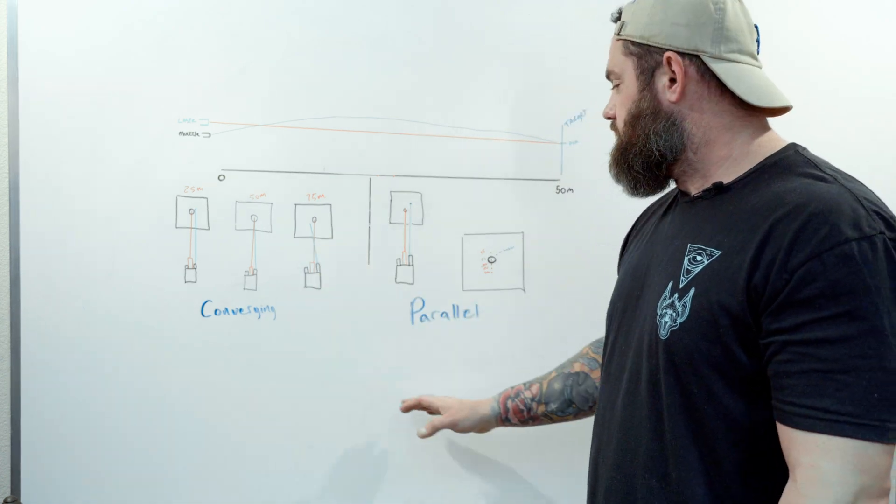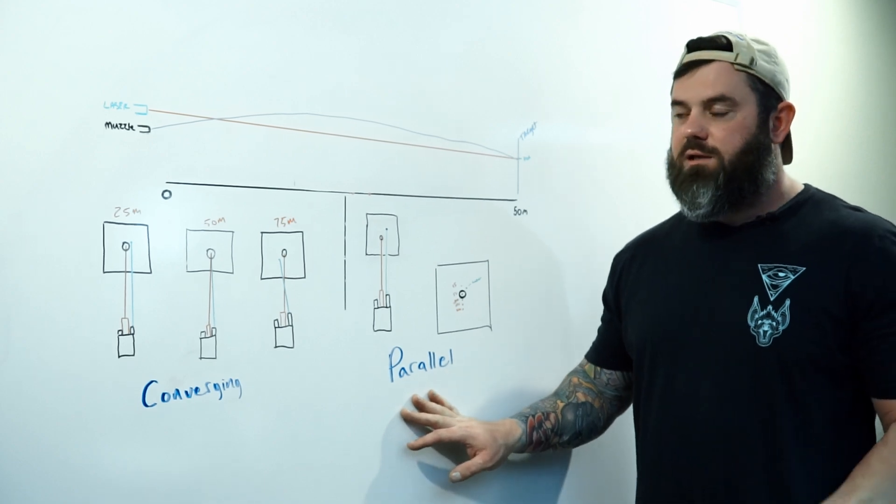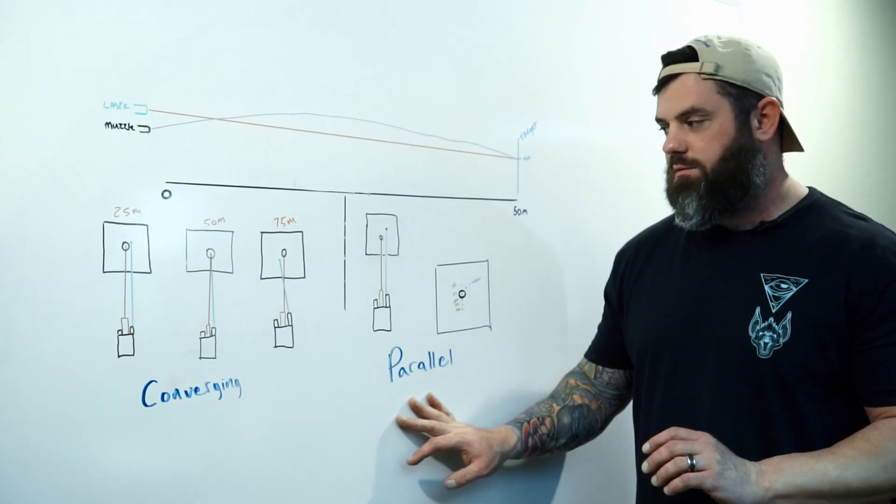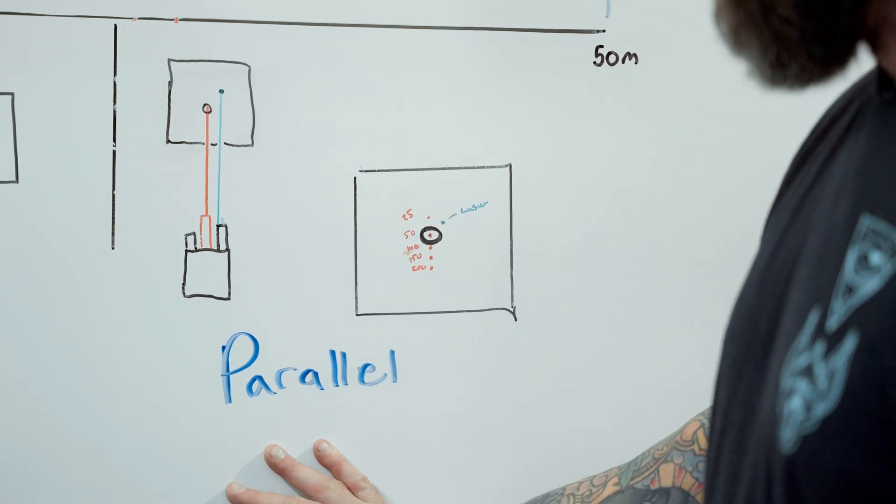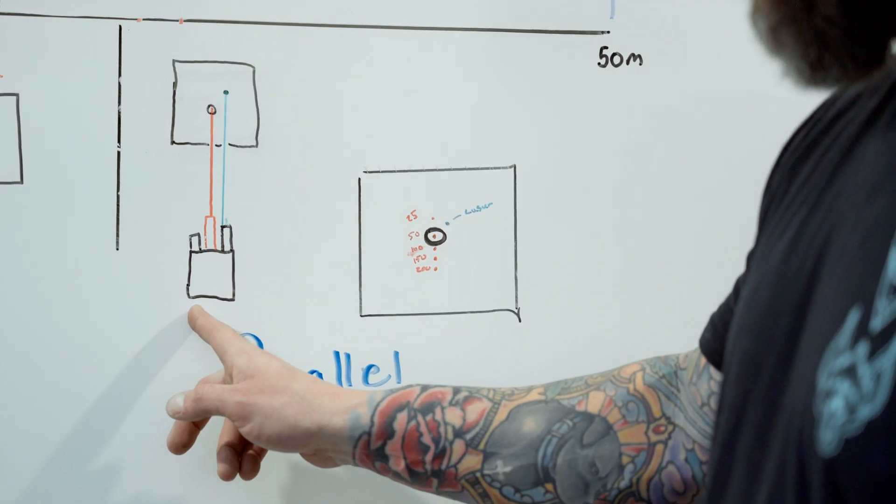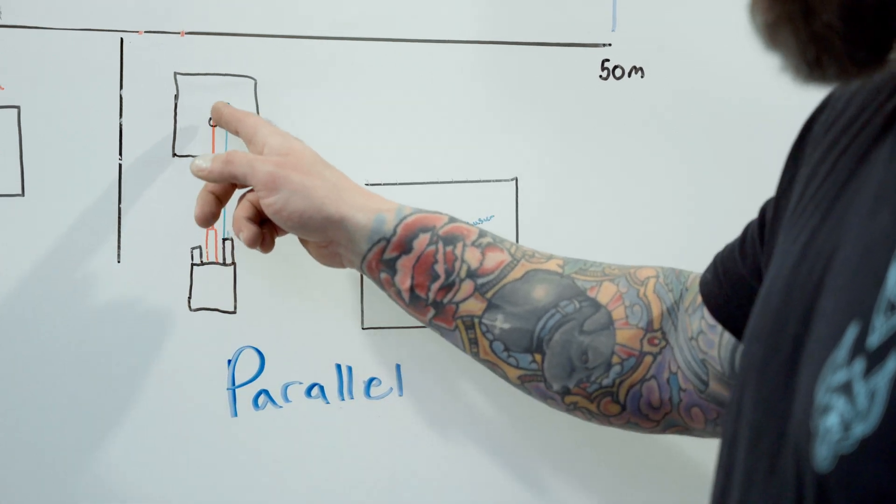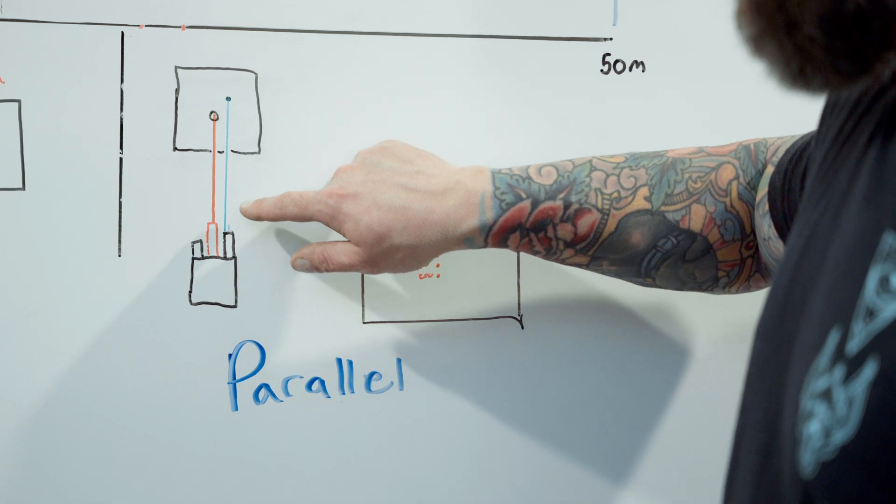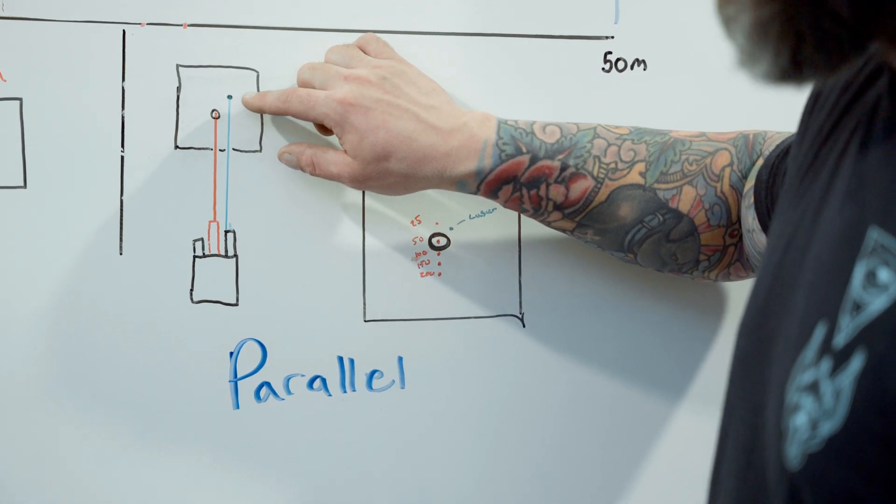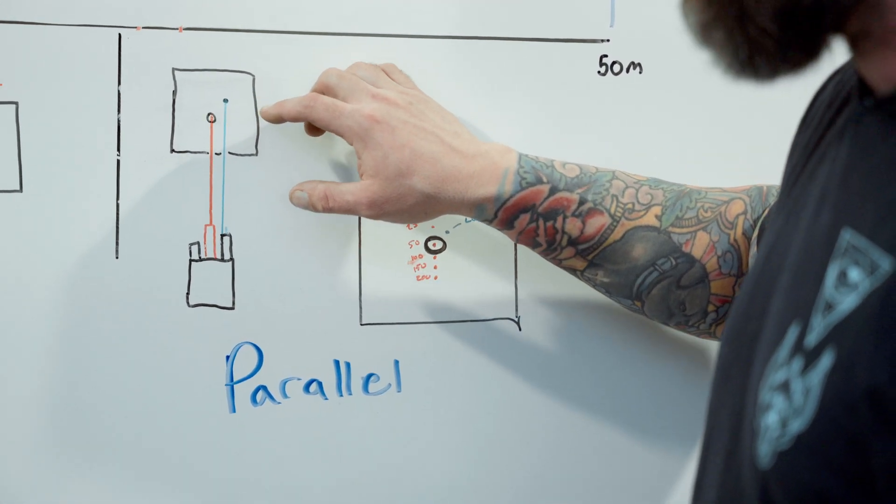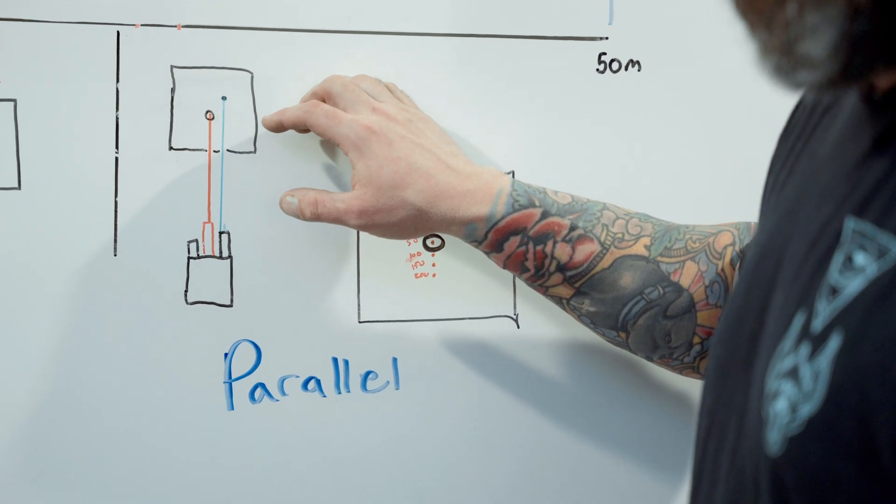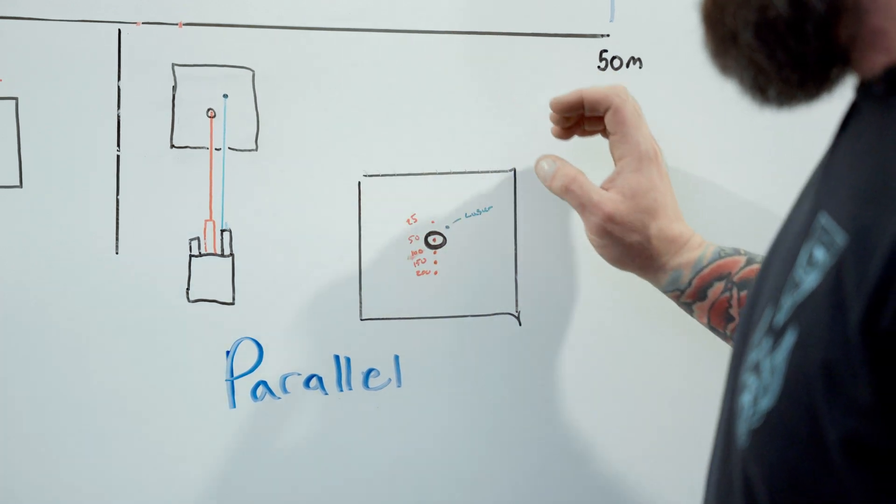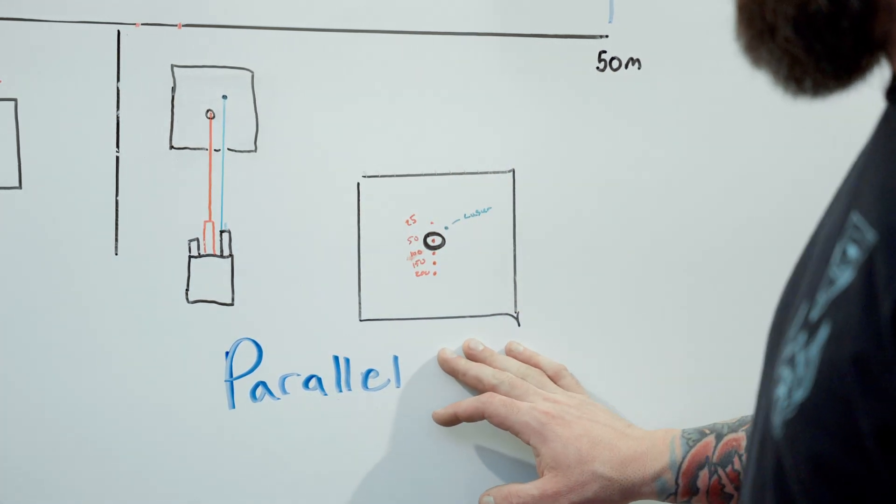Moving on, this is a rough example of a parallel zero and what that looks like in the real world. Again, terrible laser drawing, path of projectile, center of the target, path of laser, always a little bit high right because that's essentially the offset of the laser in relation to the centerline of the bore. On the target, you would see something like this.